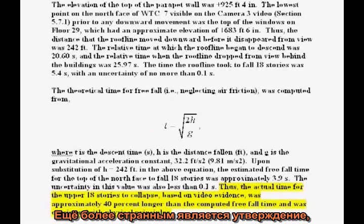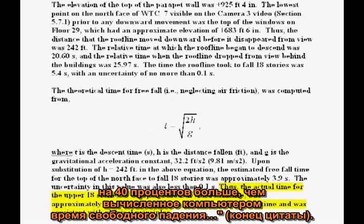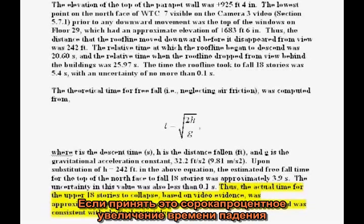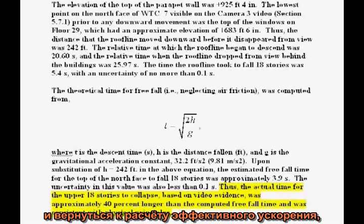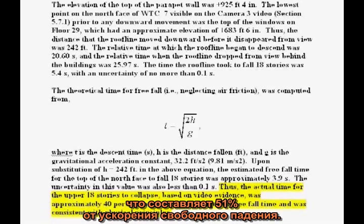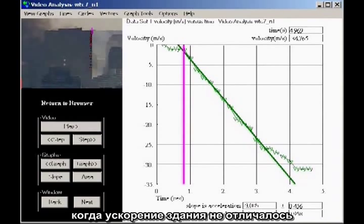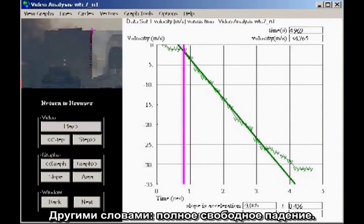More bizarre is the claim that, quote, the actual time for the upper 18 stories to collapse, based on video evidence, was approximately 40% longer than the computed freefall time. If you start with a 40% increase in the time of fall and work backwards to compute the effective acceleration, their claim is equivalent to saying the acceleration of the building is only 5 meters per second squared, which is 51% the acceleration of gravity. Our results, however, clearly show a significant stretch of time in which the acceleration of the building is indistinguishable from the acceleration of gravity itself — in other words, complete freefall.